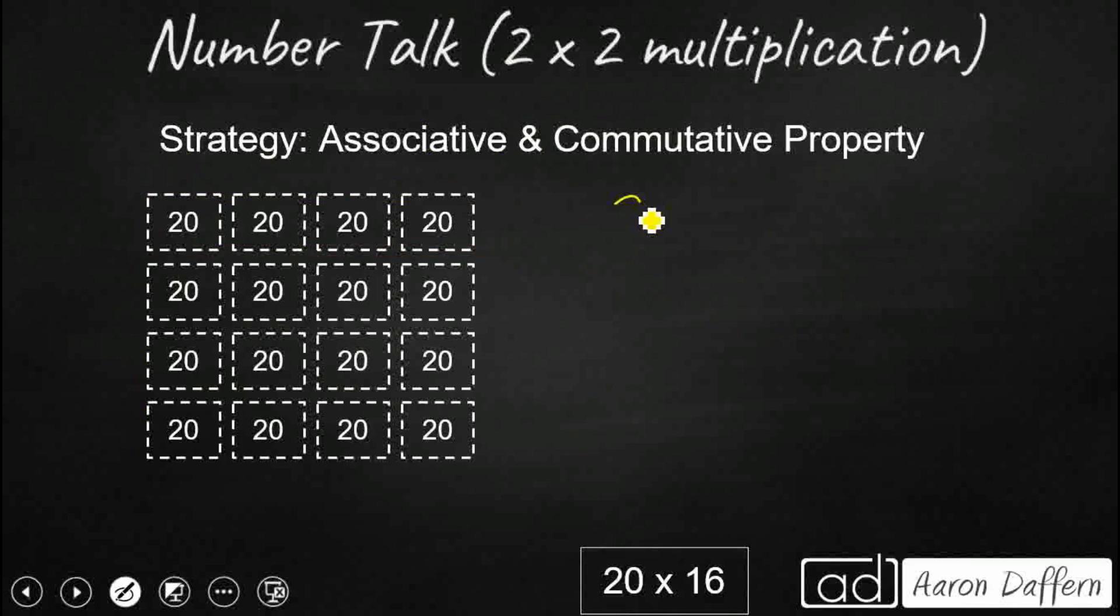We can also look at our 20 times 16, and we could, instead of breaking apart that 20, let's break apart that 16. And let's look at our 16 as a 4 times 4. And so now I've got three factors, and so I'm going to reorder them again. I'm going to put my 20 times 4. I'm going to shift those parentheses.